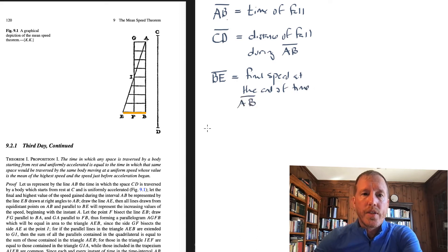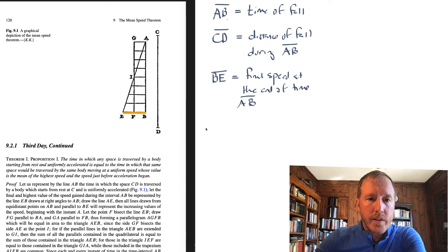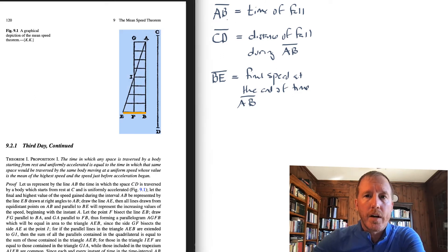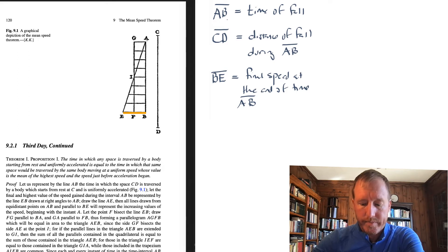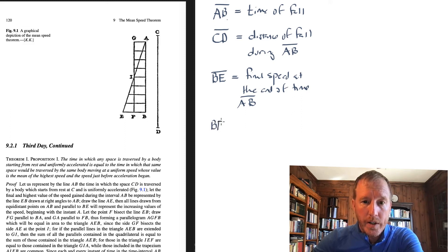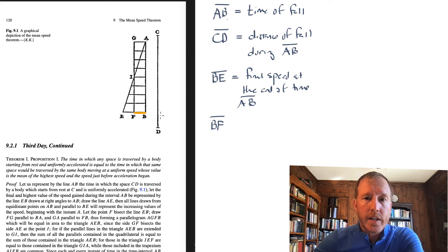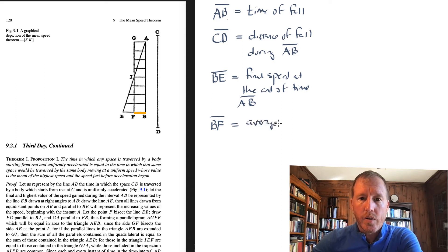And he also mentions — and this again is in that long paragraph below Theorem 1, Proposition 1 — he says that the line segment BF represents the average or the mean speed of the falling object.